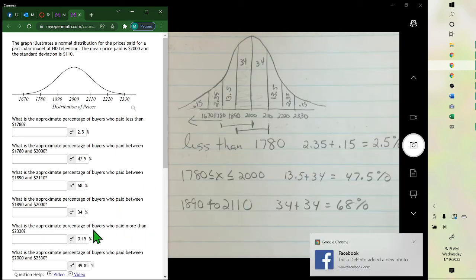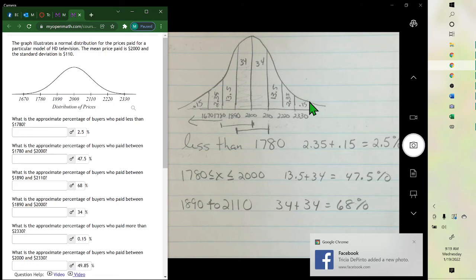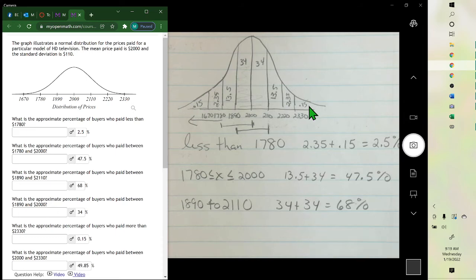Approximate percent more than $2330. $2330 is here. So it would only be this part because this is the only part above. And that's 0.15%.